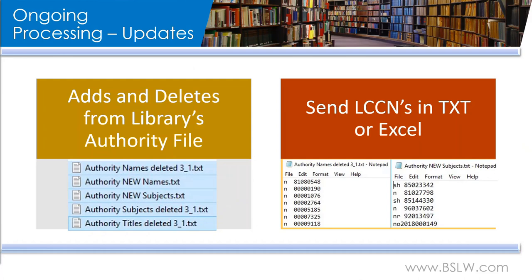In the far left example, there are five different text files provided by one of our clients, designated into names deleted, new names, new subjects, and so on. On the right-hand side are examples of the LCCNs contained within those text files — very simple lists that show the control number in the same format as they would appear in the 010 field of the authority record. This step is vital because we want to be sure that you are receiving updates for authorities that you are actively using, and we want to avoid sending you any authority records for ones that you have deleted.